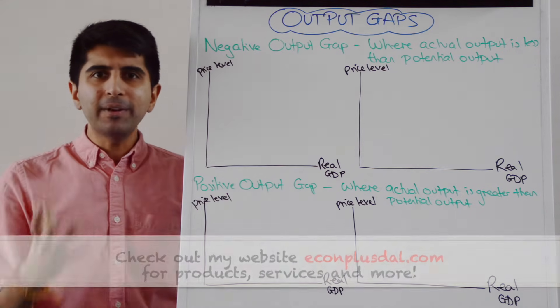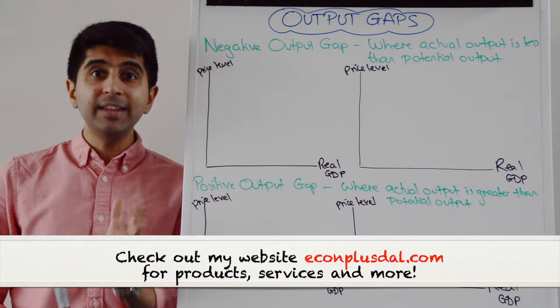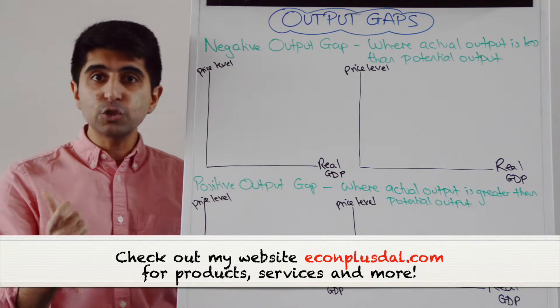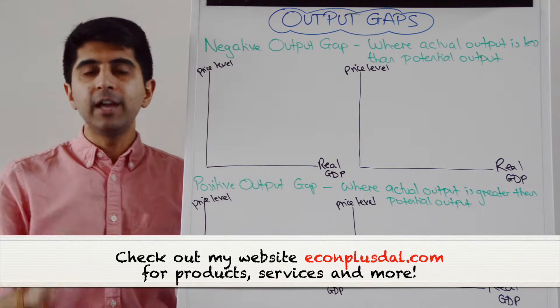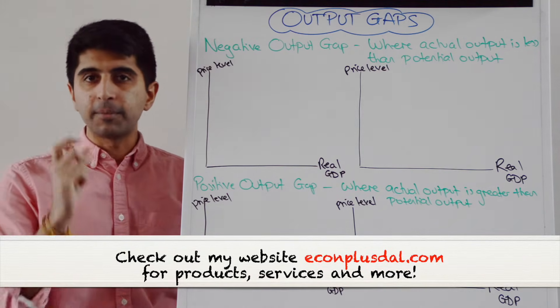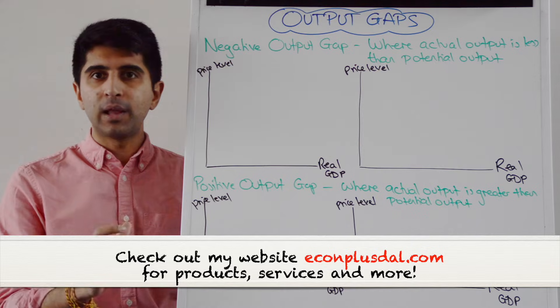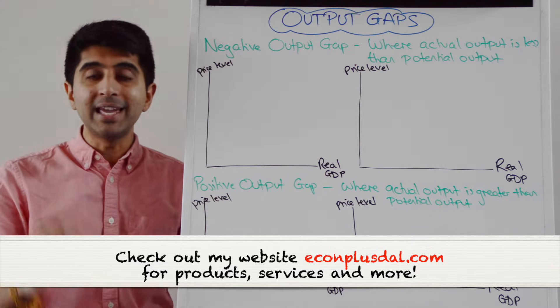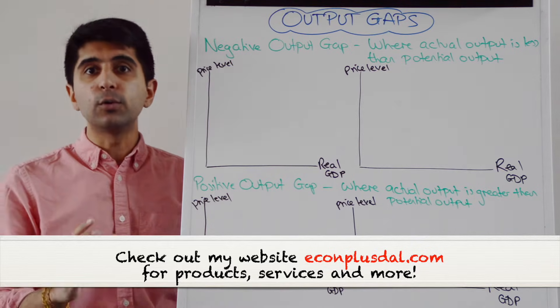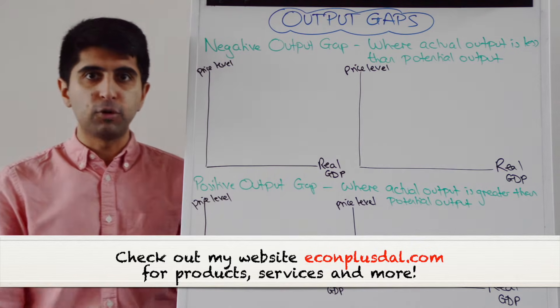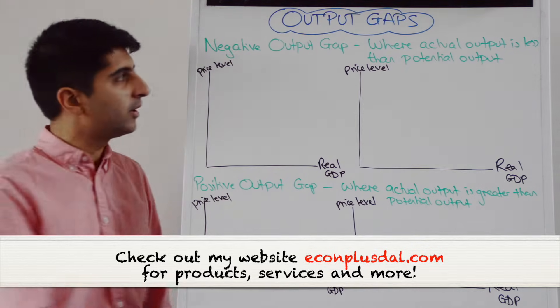Hi, everybody. Output gaps occur anytime where the actual level of output is different from the potential level of output, i.e. it is not equal to the full employment level of output.